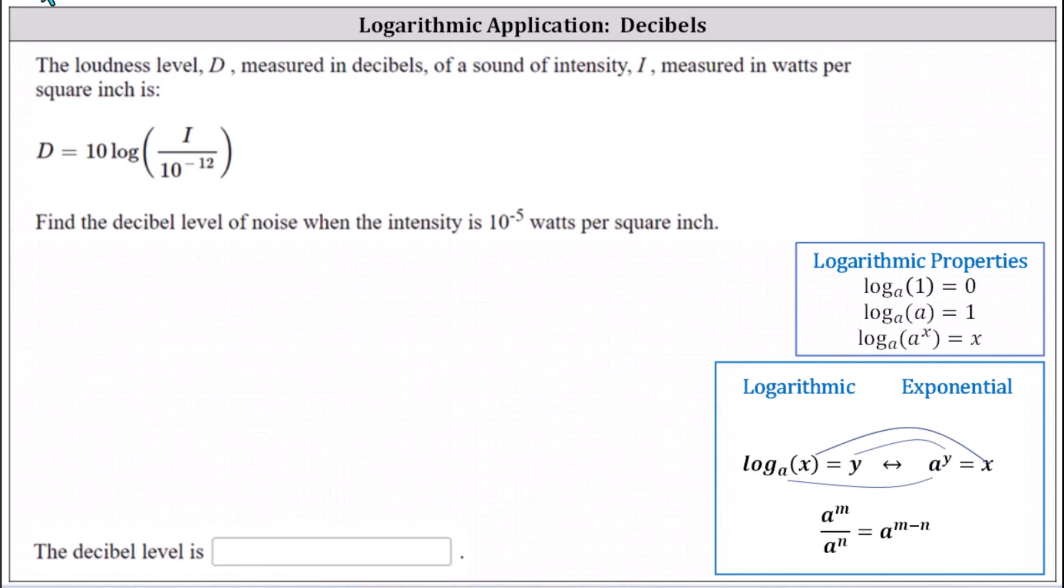The loudness level D, measured in decibels, of a sound of intensity I measured in watts per square inch, is D equals 10 times common log of I divided by 10 to the power of negative 12. Find the decibel level of noise when the intensity is 10 to the power of negative 5 watts per square inch.